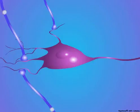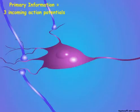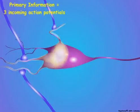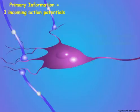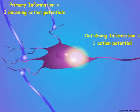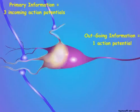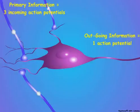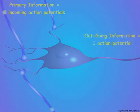Through temporal and spatial summation, the primary information conveyed by the frequency of action potentials in the presynaptic neurons is interpreted and conveyed as a new frequency of action potentials in the postsynaptic neuron. In this way, the primary information from a sensory neuron is modified and integrated with the other information circulating in the nervous system at any given moment to produce behaviors that meet the needs for survival, benefit, and reproductive success of the individual animal.